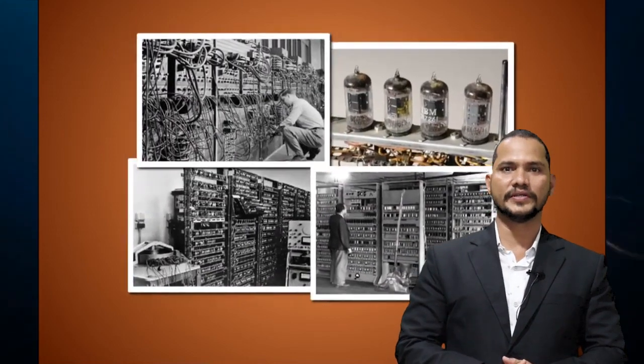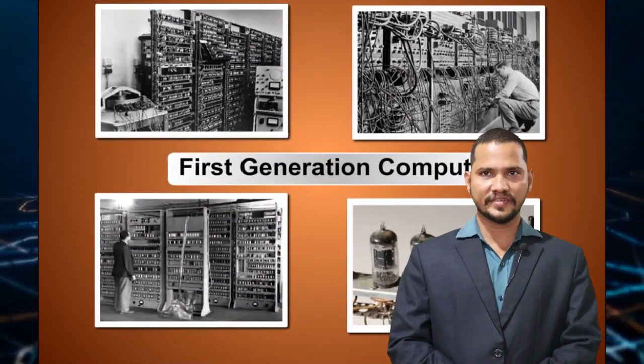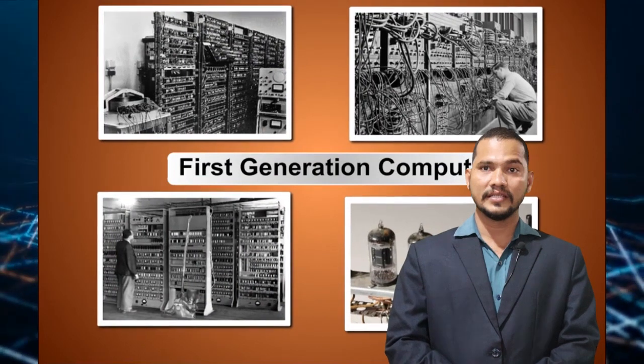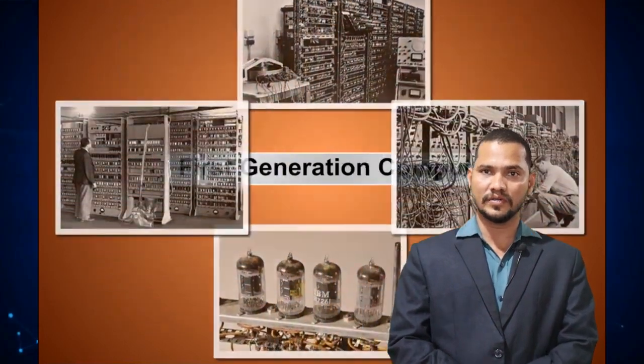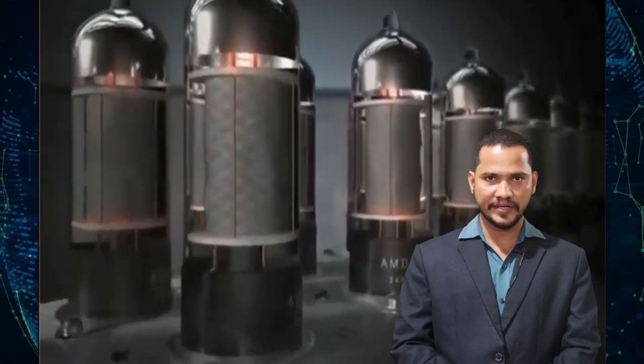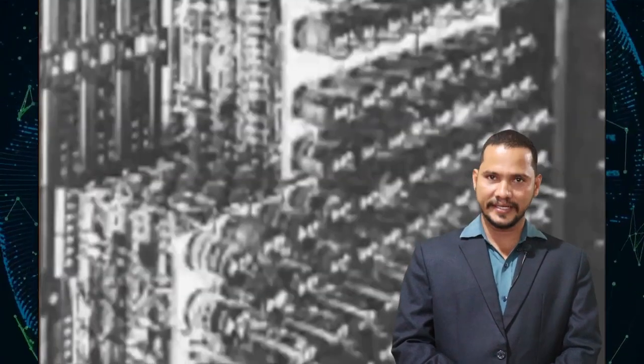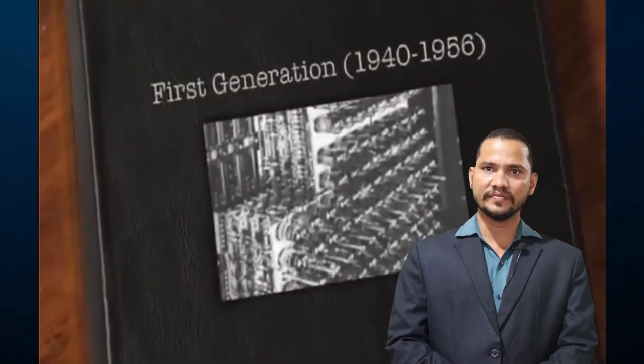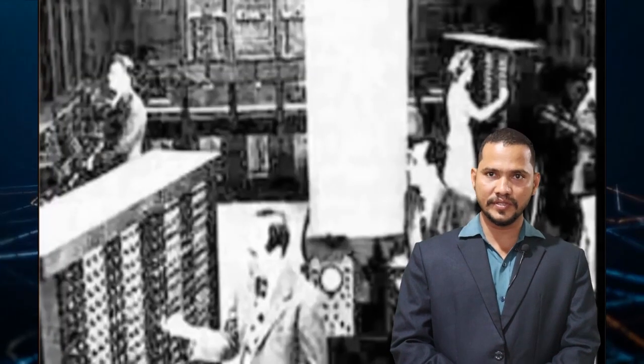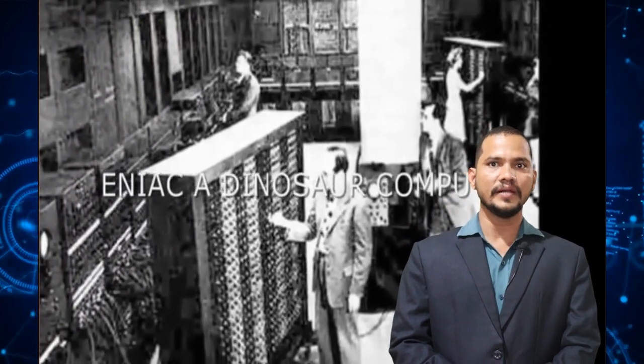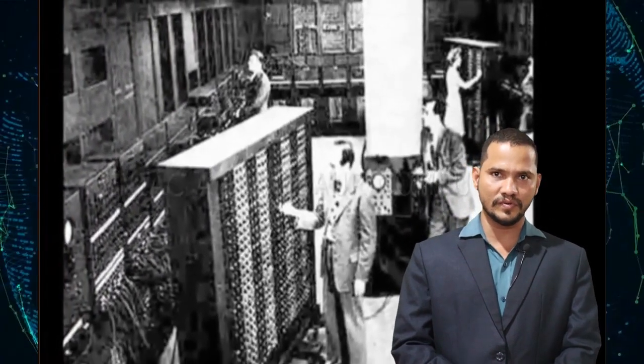Let us know about the different generations of computers. The period of the first generation of computers was from 1940 to 1956, using vacuum tubes. The first generation computers started using vacuum tubes as a basic component for the memory and the circuitry for the central processing unit. The input to the computer was through paper tapes and punch cards.